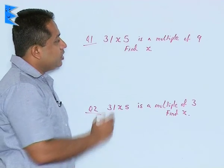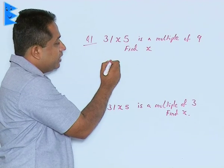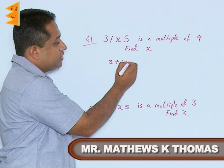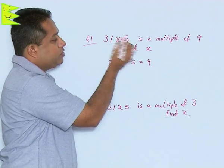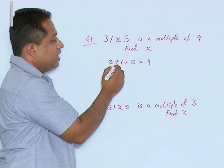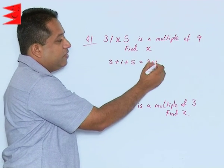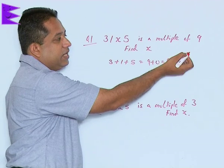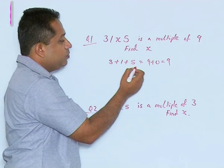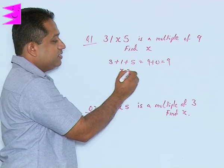Now if you see the total of these values which are given, this is 3 plus 1 plus 5, it is already 9. Therefore the value of x could be 0 because if I am putting 0 to this, the value will remain 9 itself and we know that 9 is divisible by 9. So one possible value is that x is 0.